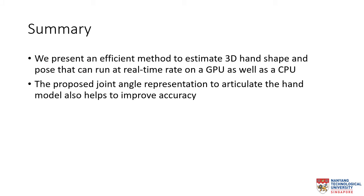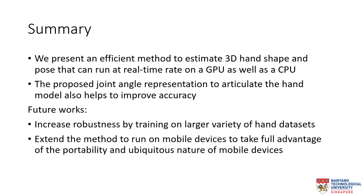In summary, we present an efficient method to estimate 3D hand shape and pose that can achieve comparable accuracy against most of the existing methods, while the runtime of our method is the fastest on GPU as well as CPU. The proposed joint angle representation to articulate the hand model also helps to improve accuracy. Some future works include increasing robustness by training the network on a larger variety of hand datasets, and extending the method to run on mobile devices to take full advantage of their portability and ubiquitous nature.